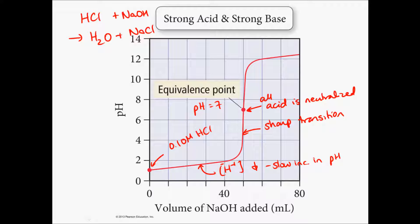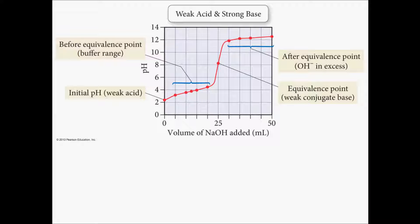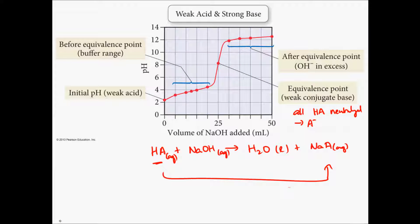The next possibility is if I start with a weak acid as the analyte and I titrate it with a strong base. This gets a little more complicated. For example, if I have HA plus NaOH going to form H2O and NaA. At the equivalence point, it means that all HA is neutralized. If all of the HA here is neutralized, we form A minus, or NaA, which is the conjugate base.